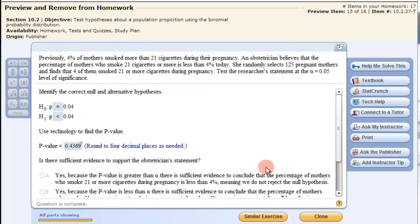Let's look at this problem here. We read through here. It says previously 4% of the mothers smoked more than 21 cigarettes during their pregnancy. An obstetrician believes that the percentage of mothers who smoke 21 cigarettes or more is less than 4% today. She randomly selects 125 pregnant mothers and finds that 4 of them smoked 21 or more cigarettes during pregnancy. Test the researcher's statement at the α=0.05 level of significance.